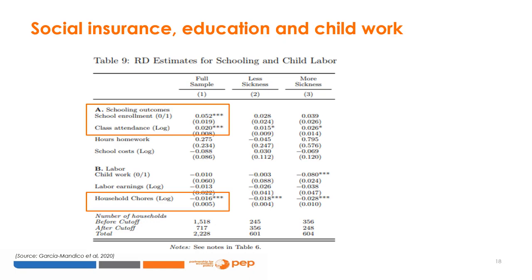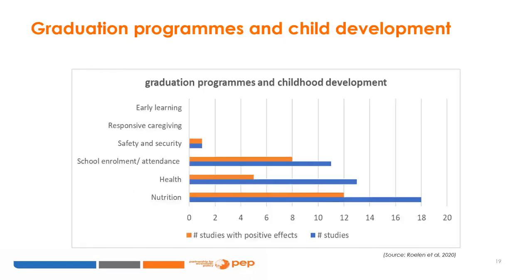Because the health insurance reduces the strain on family resources, it reduces the need for children to engage with household chores as their parents work outside the home. The graph provides an overview of the impact of graduation programs on different aspects of child development. The greatest number of studies are in the areas of nutrition, health, and education. Most studies consider and find significantly positive impacts on intermediate outcomes, such as dietary diversity or school enrollment. Little evidence is available about ultimate outcomes such as nutritional status or learning. Few studies have considered aspects of safety and security, and no studies have looked into the impact of graduation programs on responsive caregiving or early learning.